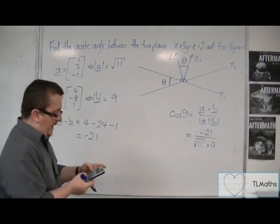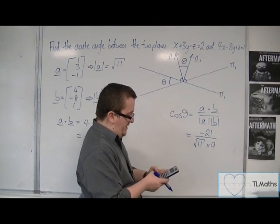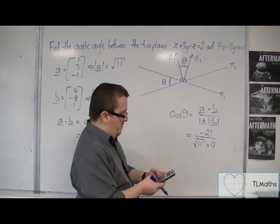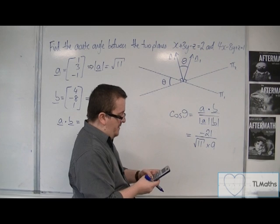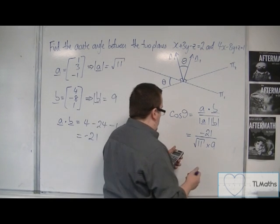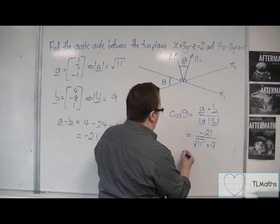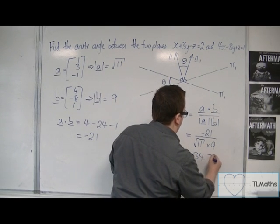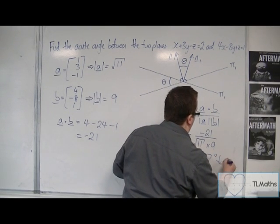So inverse cosine of -21 over root 11 times 9 gets you 134.7 degrees, to one decimal place.